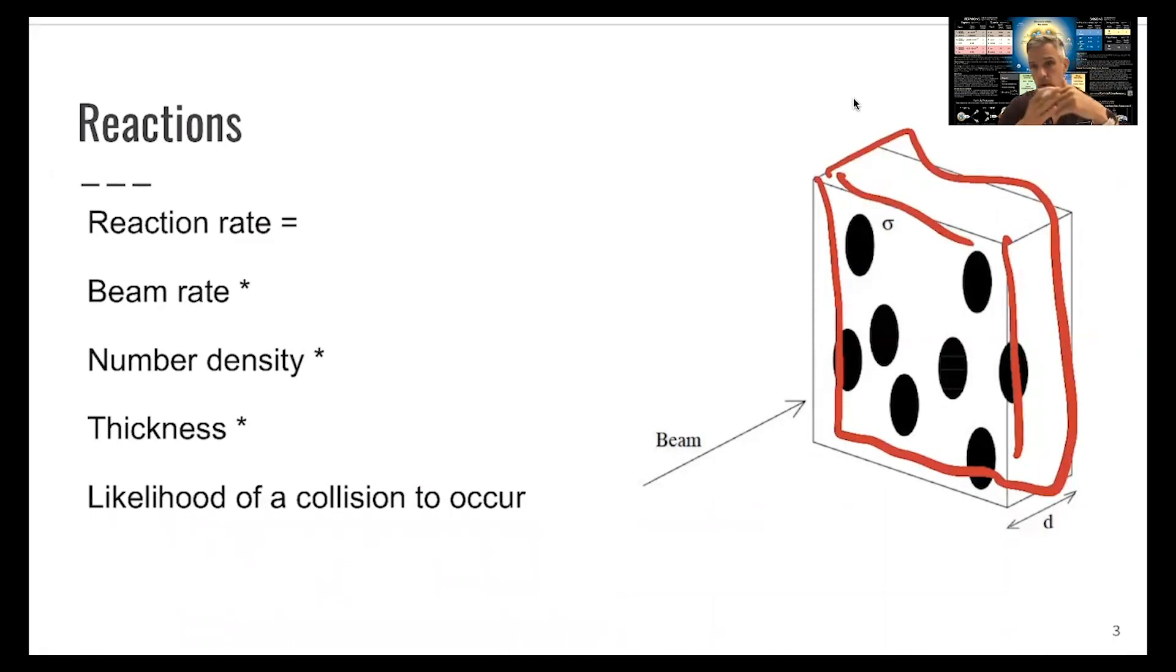The thickness. So you go along - the thicker the material the target is, the more likely it is for reactions to occur. And then by the actual physics, by the likelihood of a collision to occur. And this likelihood is called a cross section. And we can think about this cross section as a geometrical area.